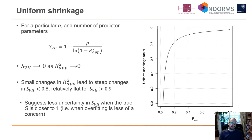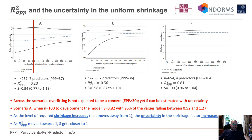Let's quickly see uniform shrinkage in practice. For a fixed n and fixed number of predicted parameters, the graph shows the relationship between the apparent R² and the required shrinkage factor. As the apparent R² approaches 0, you need more shrinkage because the factor approaches 0. We can observe that for small values of the apparent R², small changes will lead to big changes in the shrinkage factor, suggesting considerable uncertainty in how we estimate the shrinkage factor for smaller values of the apparent R².